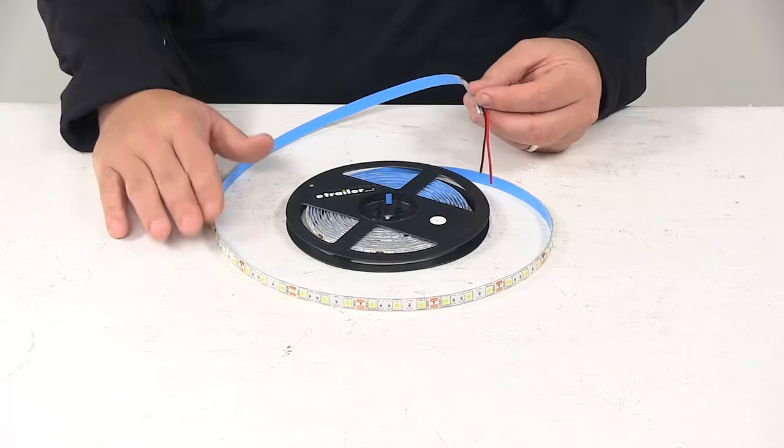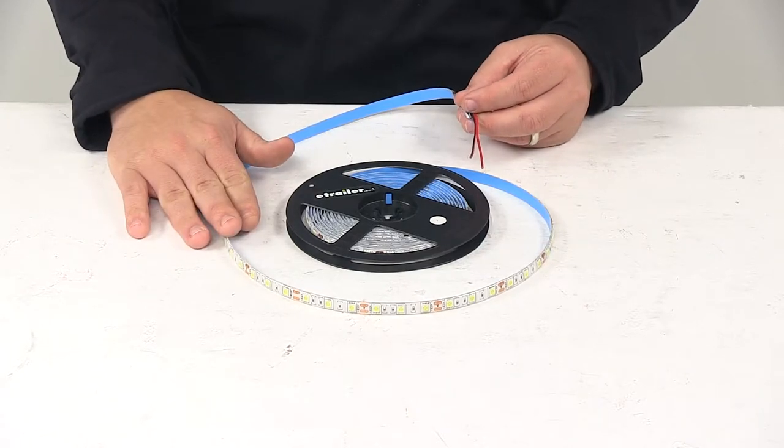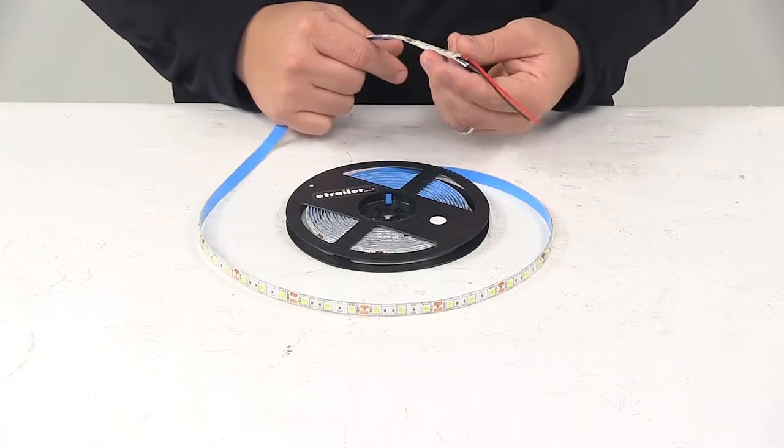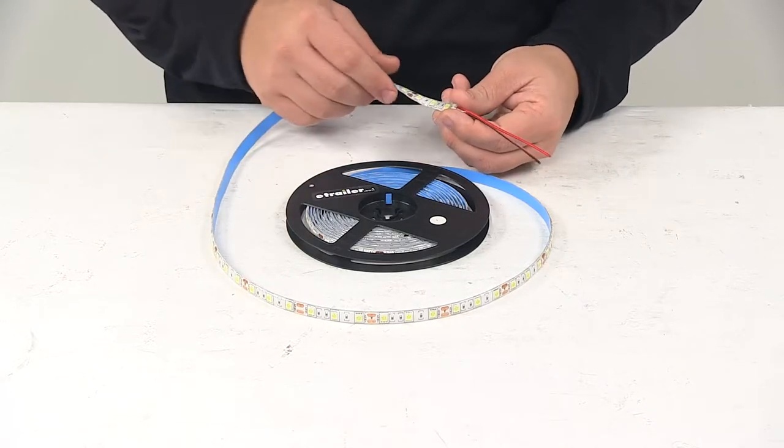We're looking at durable surface block technology when it comes to the construction of the LEDs and the little circuit boards. Better withstand shock and vibration, allows for improved heat distribution.